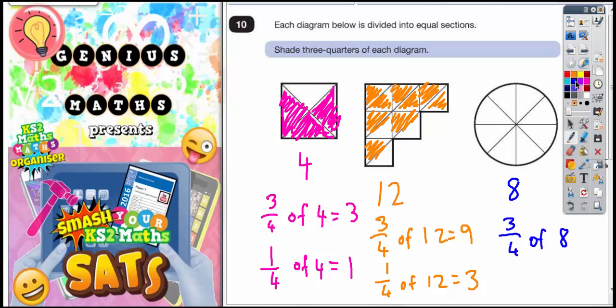On the final shape, we want 3 quarters of 8 because there's 8 sections. Well 1 quarter of 8, same again. Find a quarter. 1 quarter means you divide by 4. So 1 quarter of 8 means 8 divided by 4 is 2. So 1 quarter of 8 is 2.